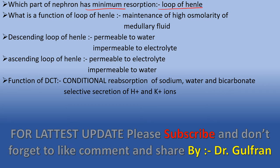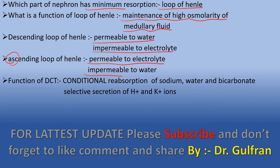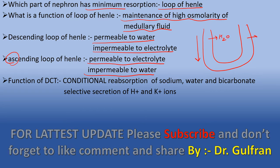The part of the nephron with minimum absorption is the loop of Henle. Its function is maintenance of high osmolarity of the medullary interstitium. The descending loop of Henle is permeable to water and impermeable to electrolytes. The ascending loop of Henle is permeable to electrolytes and impermeable to water. So water exits from the descending loop, and electrolytes exit from the ascending loop.